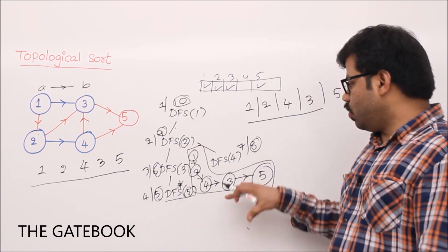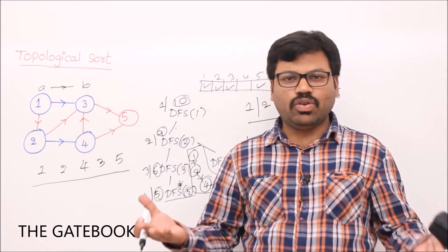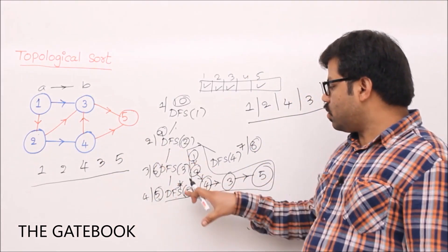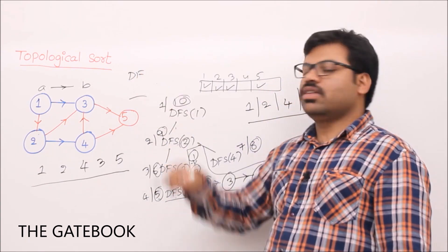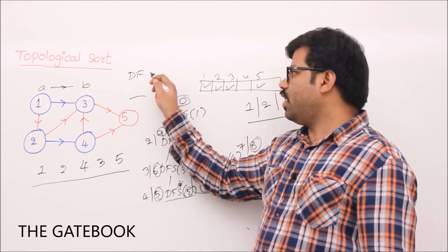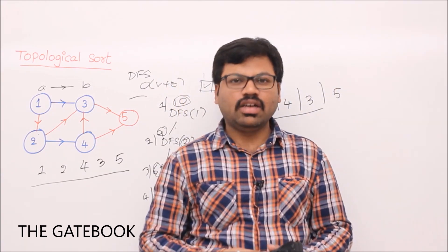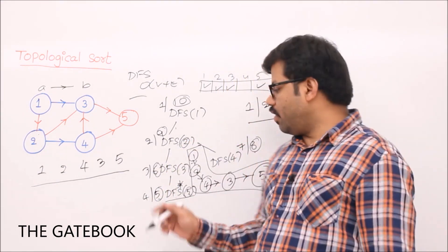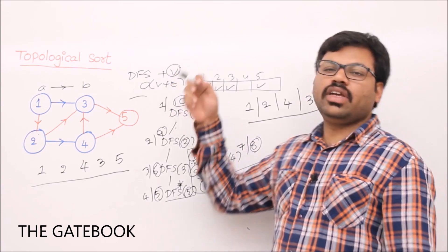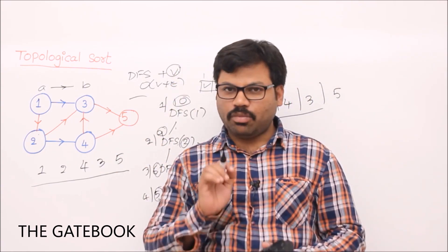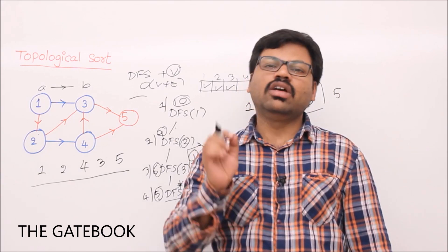By doing insert-in-front we collect the elements in the correct topological order. This is topological sort — we simply do DFS and add one insert-in-front line in the DFS method when a call closes. That extra line takes O(1) time. The DFS time complexity is already O(V+E). Insert-in-front is called at most once per vertex, so V times total. Adding them: V+E+V is still O(V+E). The time complexity of topological sort is O(V+E).